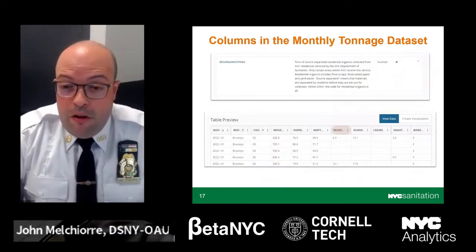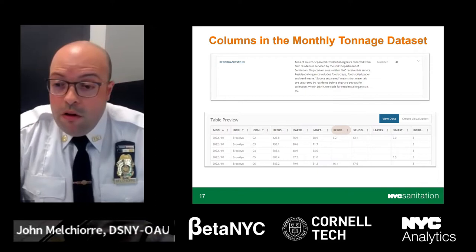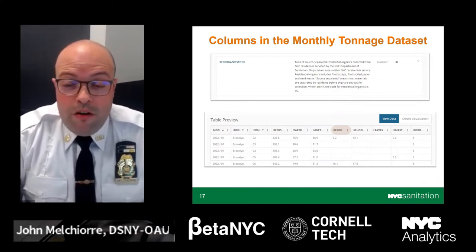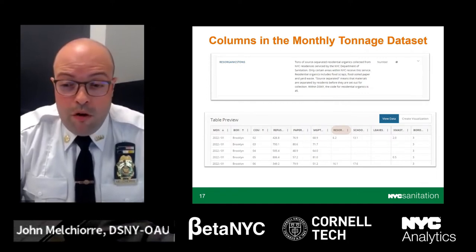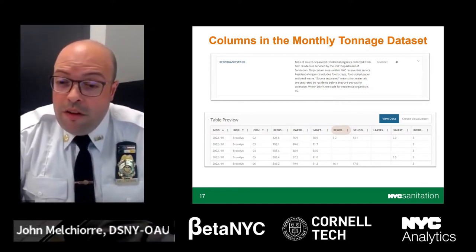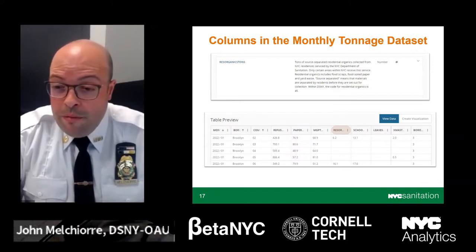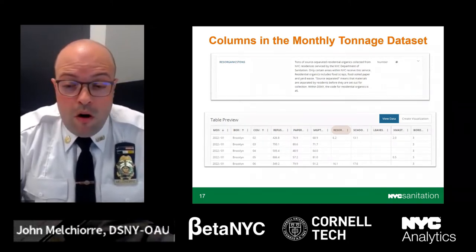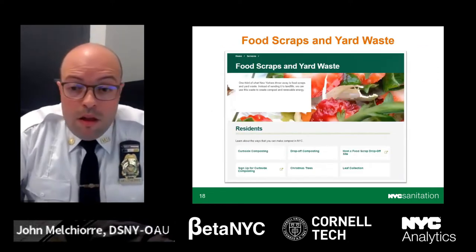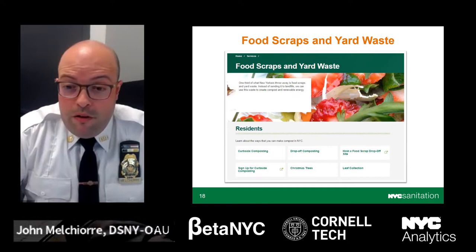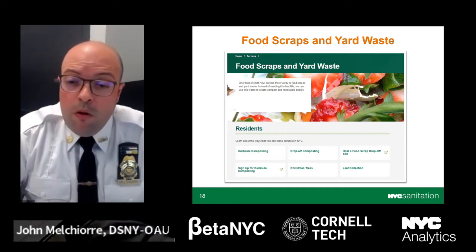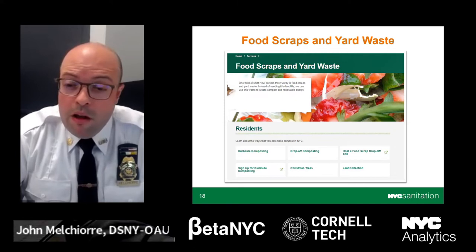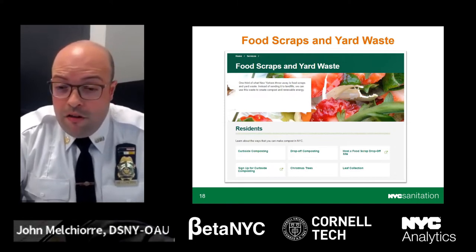The seventh column in the monthly tonnage data set, highlighted in brown, shows the tons of source-separated residential organics. Only certain areas within New York City receive this curbside composting service. Residential organics include food scraps, food-soiled paper, and yard waste. The code for residential organics is 45. Sanitation programs for food scraps and yard waste also include drop-off composting, Christmas tree collection, and leaf collection.